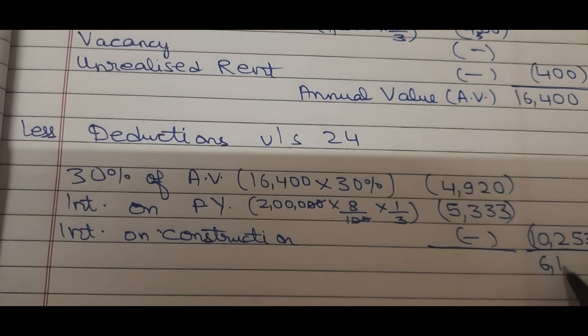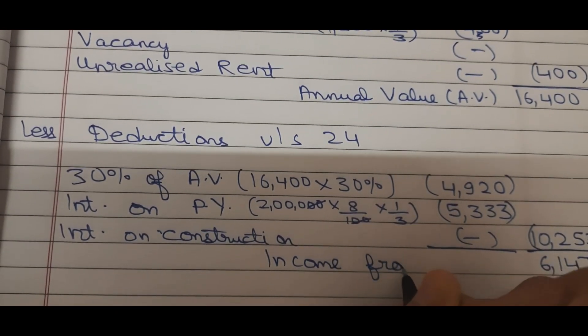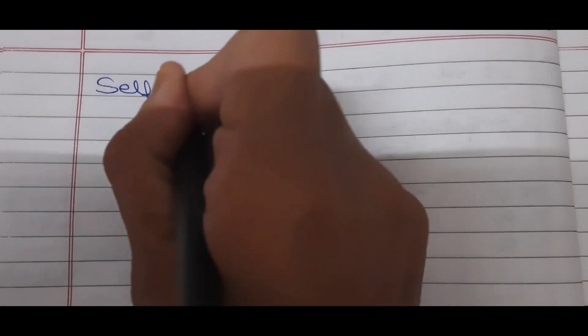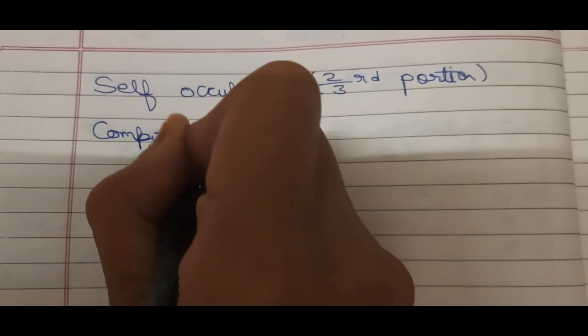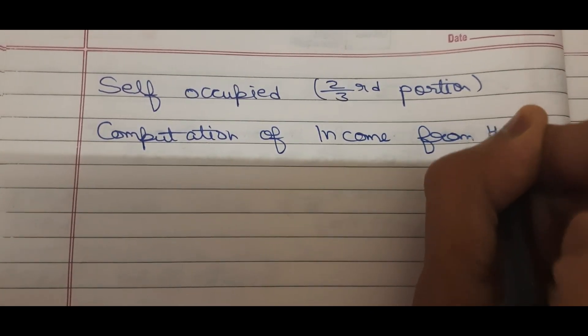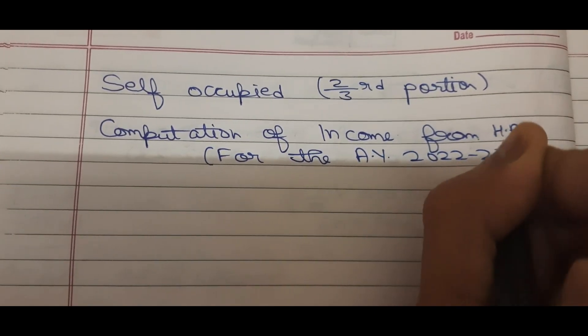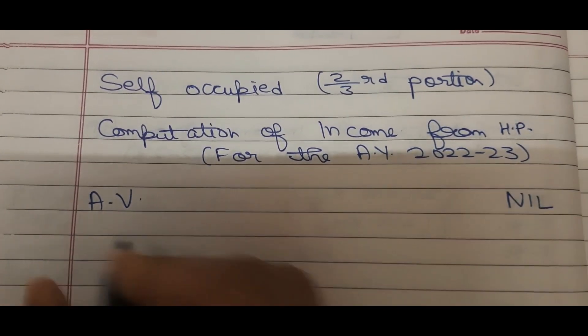Adding both deductions: Rs. 4,920 + Rs. 5,333 = Rs. 10,253. Deducting from Annual Value: Rs. 16,400 − Rs. 10,253 = Rs. 6,147 as income from let-out portion. Now we look at the second portion of the house which is self-occupied. For self-occupied, we use the same assessment year 2022-23. Gross Annual Value, municipal tax, and all are NIL, so Annual Value is directly NIL.